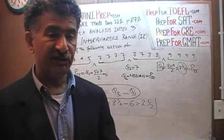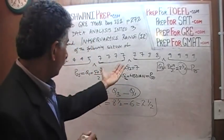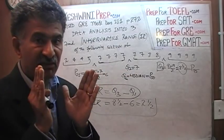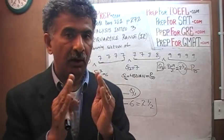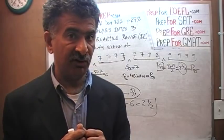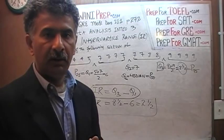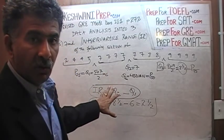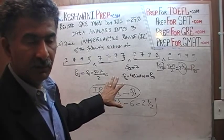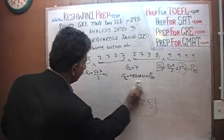Now we are going to show all of this information on a number line graph to see what it looks like. We can present the same information in a very concise, elegant manner on a number line — which is what statisticians do. They want to be quick, fast, and efficient.